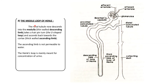The second part is the middle loop of Henle. The renal tubule descends into the medulla — the inner part of the kidney. It is a thin-walled descending limb with a hairpin turn — a U-shaped loop — and ascends back towards the cortex. The ascending part is not permeable to water. The loop of Henle is mainly meant for concentration of urine.